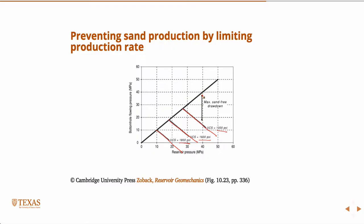The maximum drawdown is basically to the right of these curves, so anything in this region would be a safe drawdown. As you have stronger and stronger rock, that region gets larger and you have a larger area of safe drawdown.